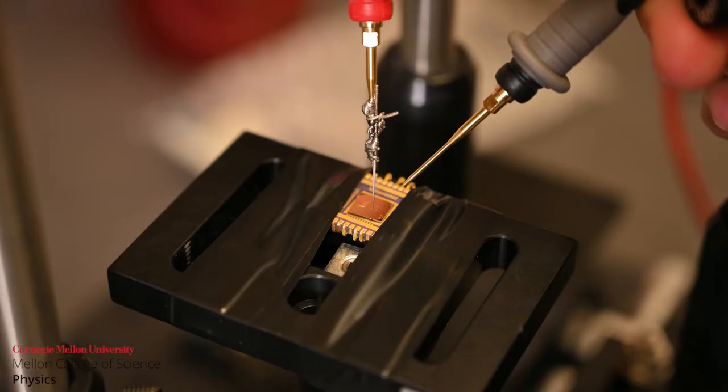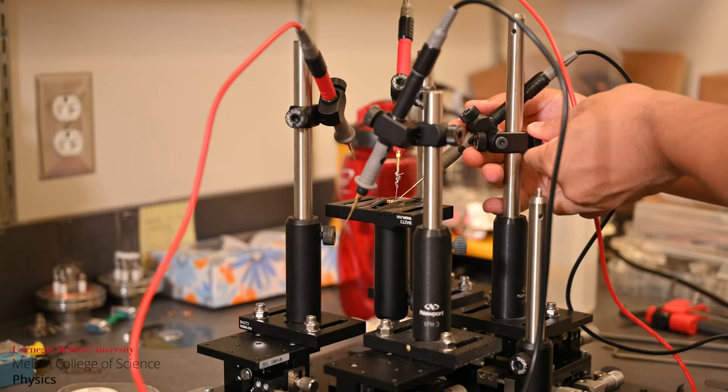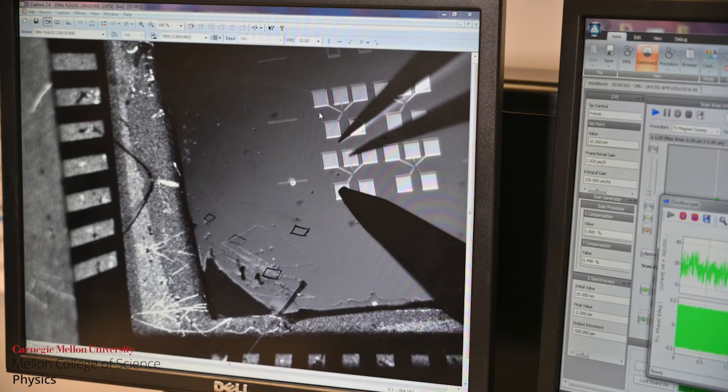We use scanning probe techniques which can measure the properties of individual nanomagnets with the probe tip in direct contact. You send a spin polarized current through the probe tip to switch the state of the nanomagnet.